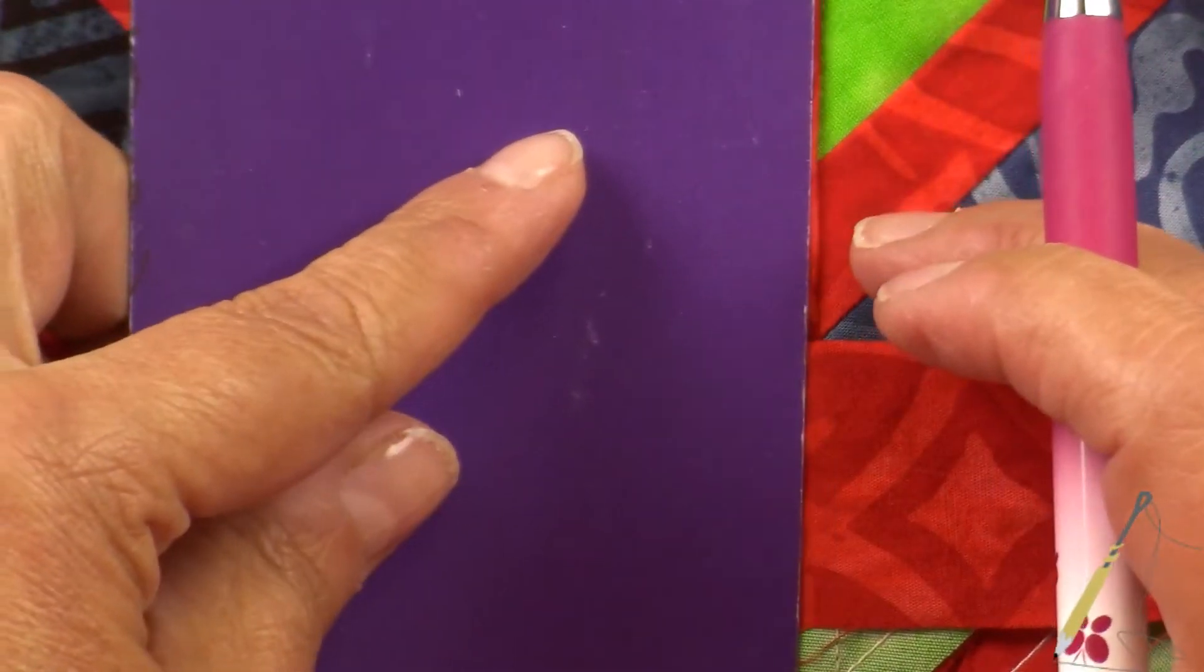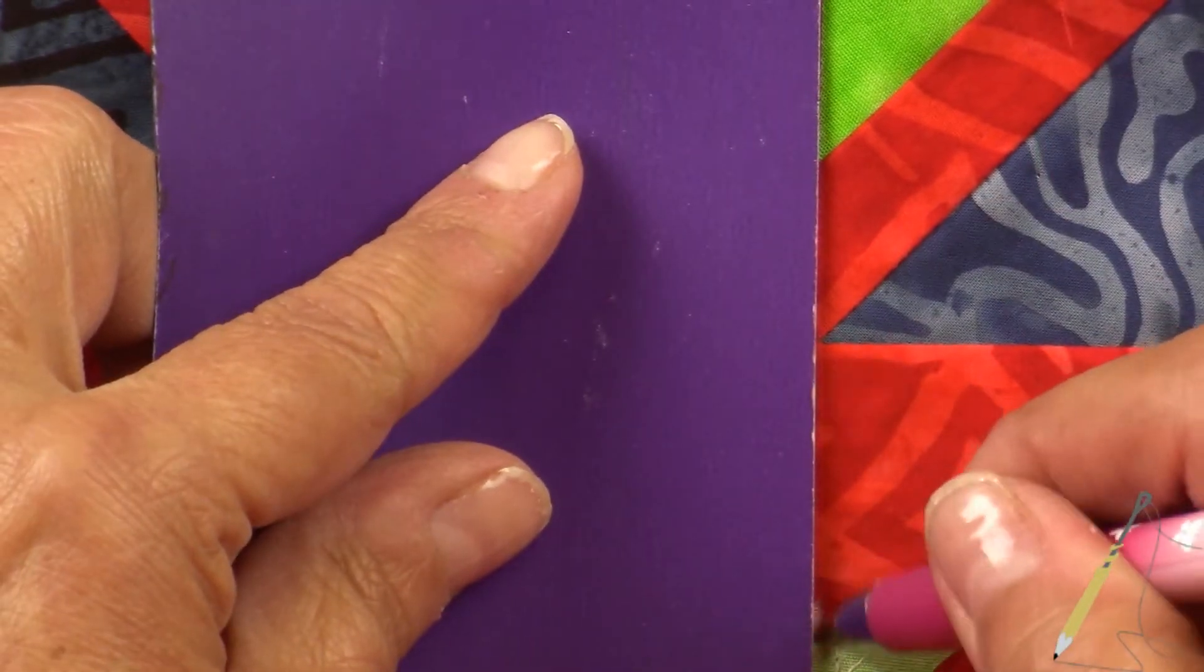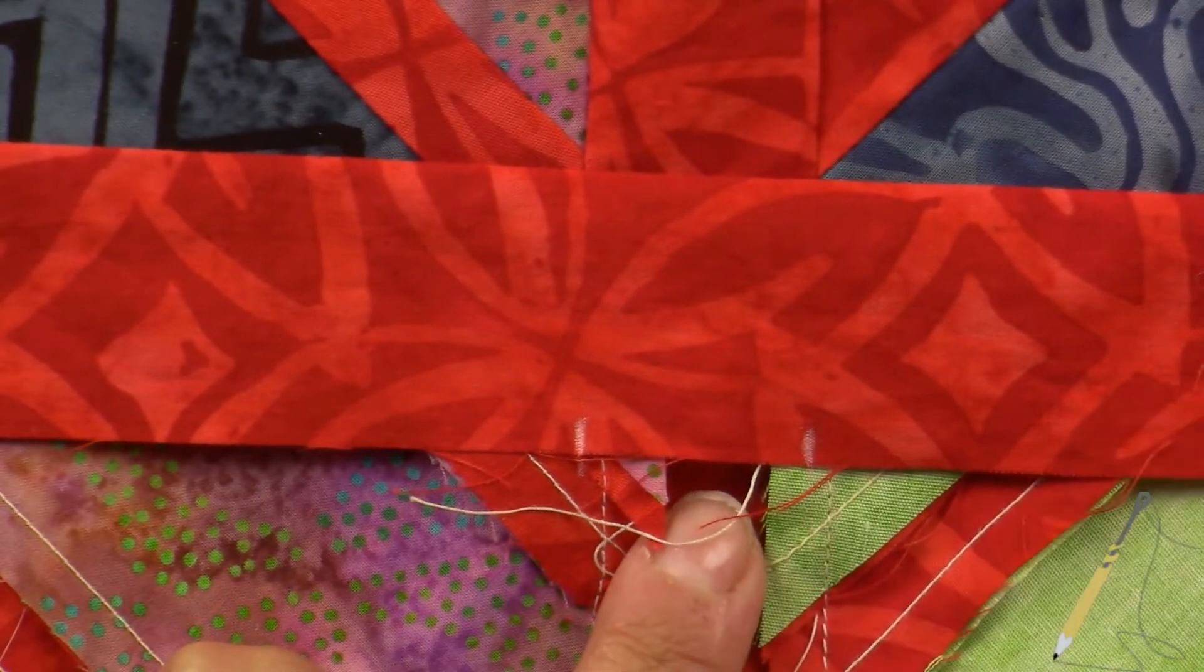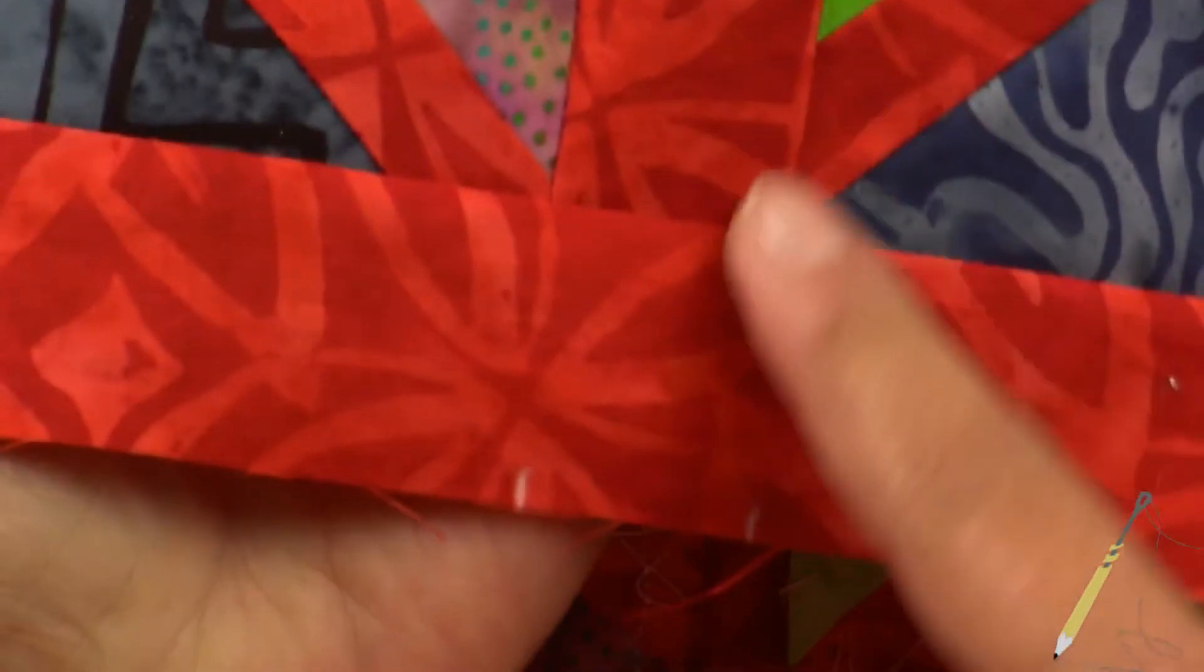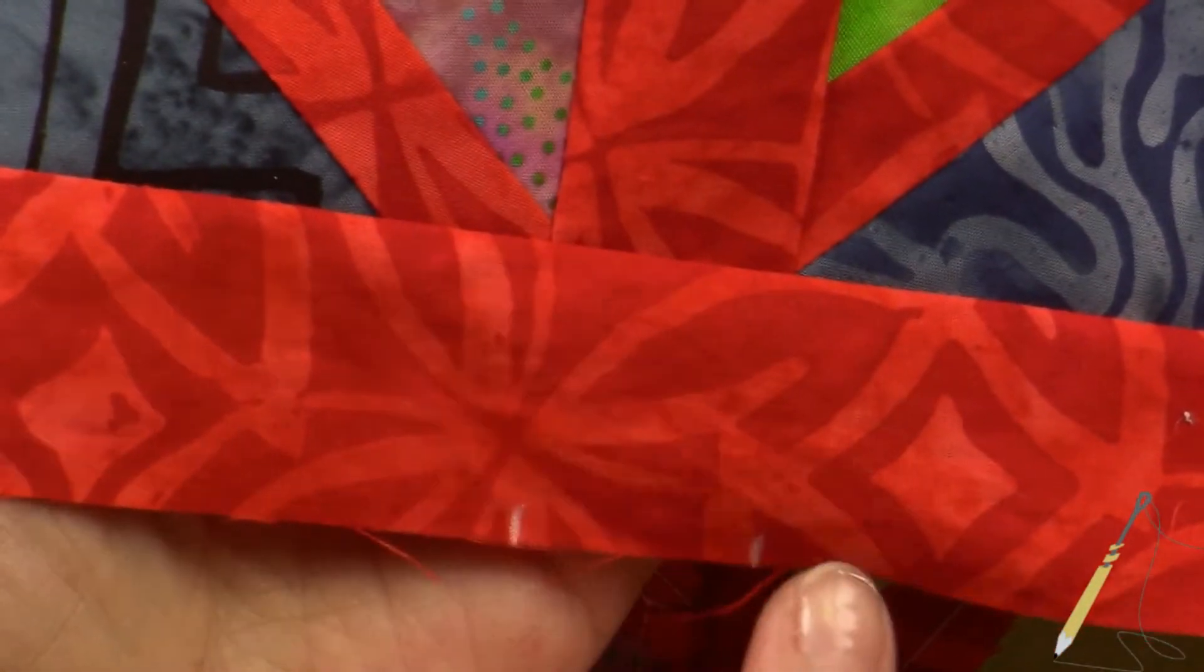And you'll do that all the way down for all of your horizontal sashings that you want to match. You want to bring those lines down to the edge, and here's how you will mark.